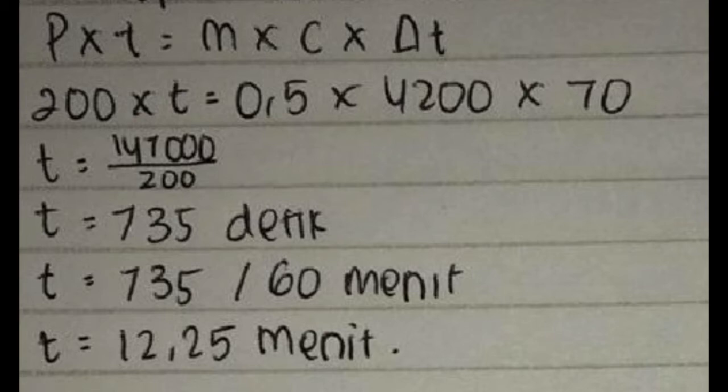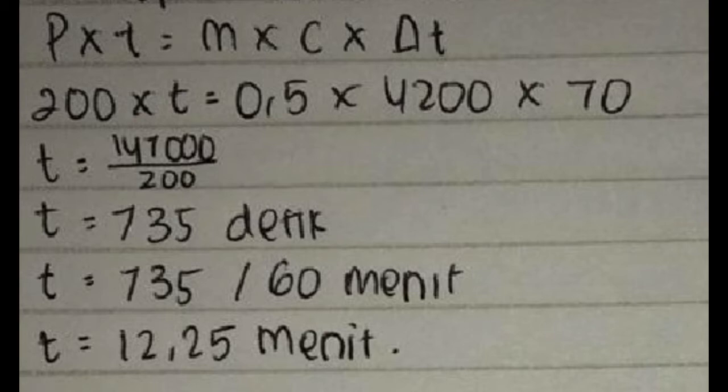Jawaban: P dikali T sama dengan M dikali C dikali delta T, 200 dikali T sama dengan 0,5 dikali 4.200 dikali 70. T sama dengan 147.000 per 200, T sama dengan 735 detik, T sama dengan 735 per 60 menit, T sama dengan 12,25 menit.